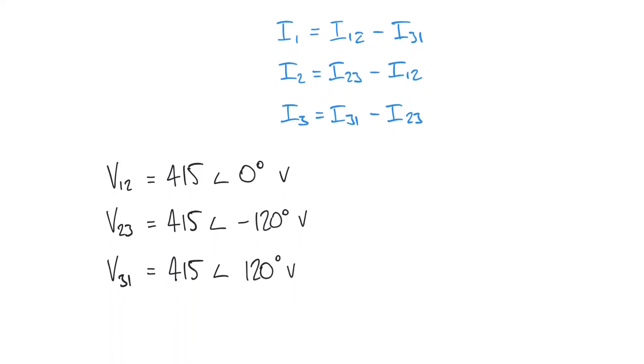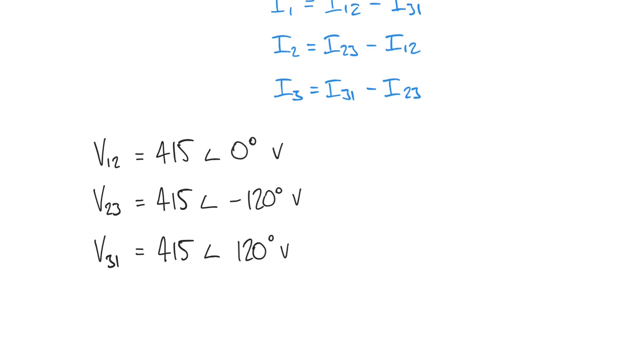In a delta network the line voltage is equal to the phase voltage and so we're going to apply those in a similar manner to the previous video to calculate our three phase currents.